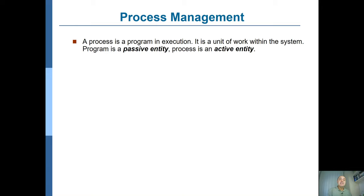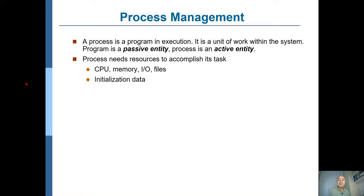A process is a running instance of your program. What's of importance in operating systems is the running program, which is the process — sometimes called a task or job. A process is a unit of work within the system. The program itself is passive because it's just residing on the disk; when it becomes active it's called a process. The process typically needs resources to accomplish tasks, like CPU, memory, I/O, privileges, and access to files.